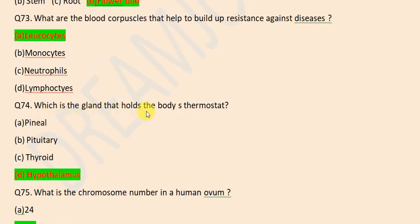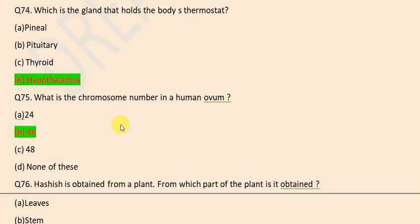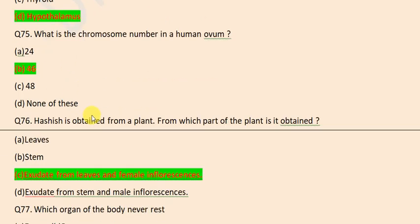Which is the gland to hold the body's thermostat? Hypothalamus. What is the chromosome number in human form? It is 46 chromosomes.